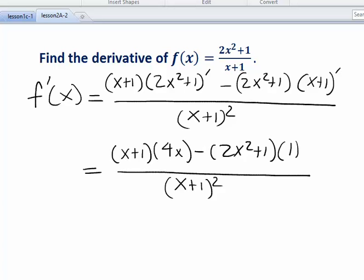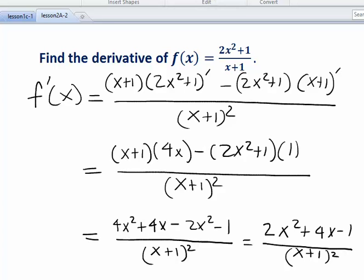And if you simplify this completely, you end up with 2x squared plus 4x minus 1 divided by x plus 1 quantity squared as the derivative.